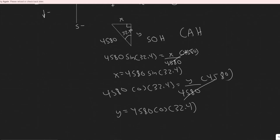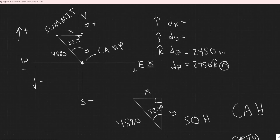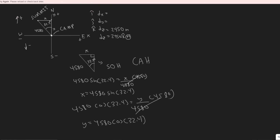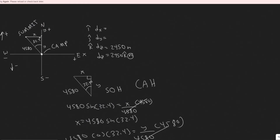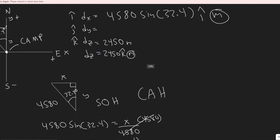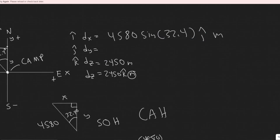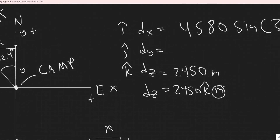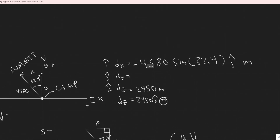So we just found our y and x components. Now let's write them with their unit vectors. For the x component, it's 4,580 sine of 32.4 with i-hat, in meters. Notice that on our axis we're going to the left — from camp to summit we're going west, which is the negative x direction — so we write a negative sign: negative 4,580 sine of 32.4 meters i-hat.